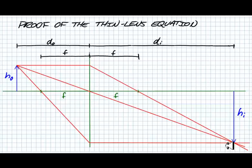We're going to do a proof of the thin lens equation. Here I have a standard ray tracing diagram of an object that is outside the focal point of a converging lens.